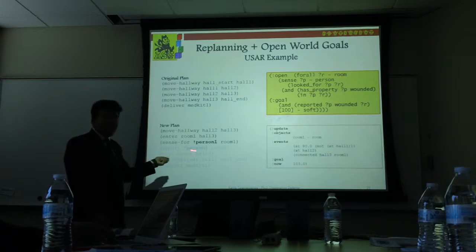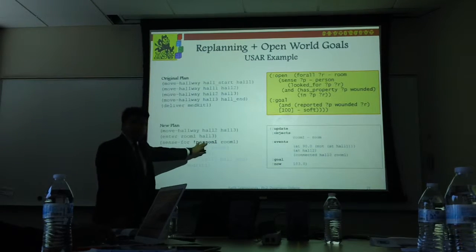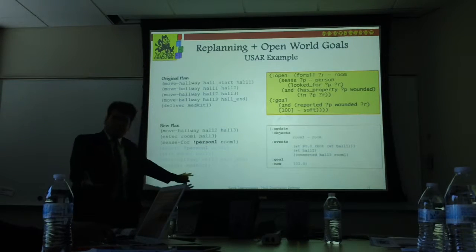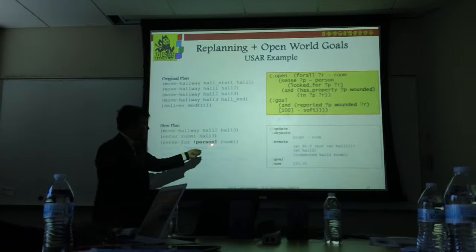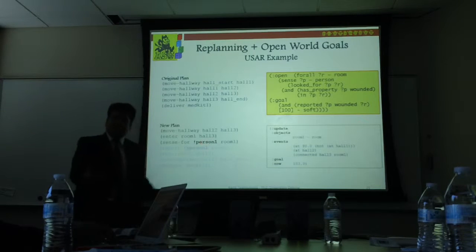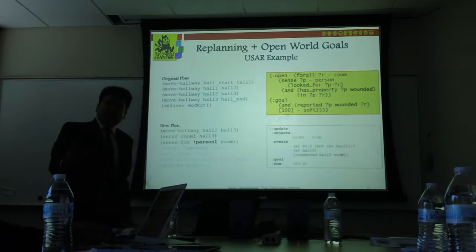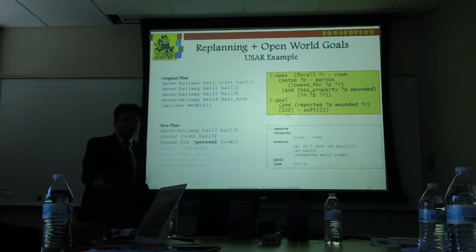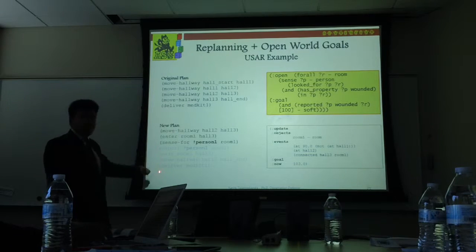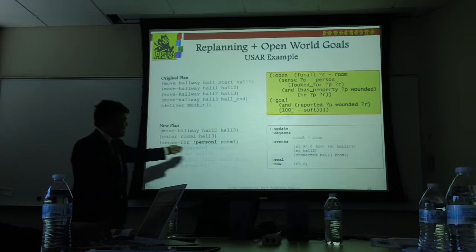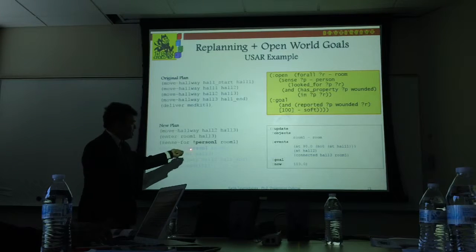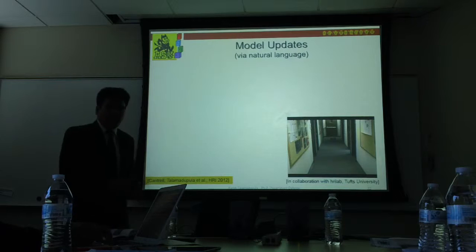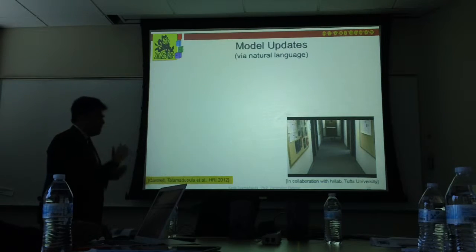When there is a sensing action in the plan, you get feedback from the world. Either the sensing action confirms this person exists — because this is a runtime object the planner has optimistically added to its knowledge base — or it comes back and says there is no person, so you replan beyond that point. It executes up to that point and then replans and continues executing the new plan.